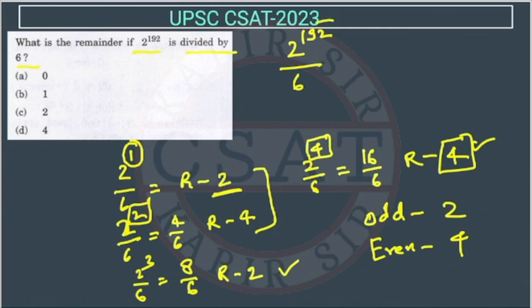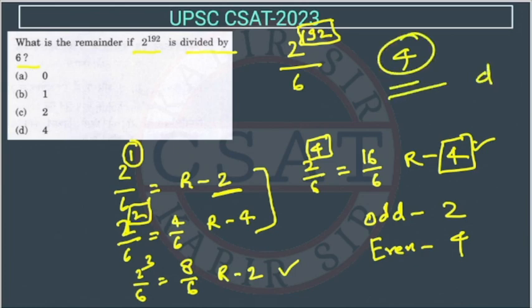So is 192 odd or even? 192 is even, so the remainder will be 4. The answer will be option D. So in this way we can solve this very easily.